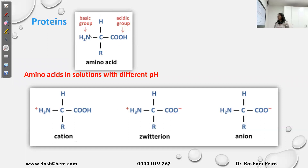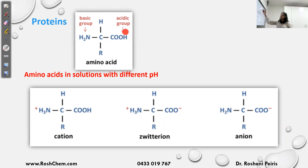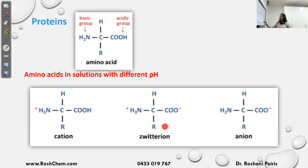Amino acids can exist in different forms depending on the solution. We can have the cation form, the zwitterion form, and the anion form. The zwitterion form is the neutral form which exists at intermediate pH, where you have COO minus and NH3 plus. The COOH group is acidic and can remove H plus to become COO minus, and the NH2 group is basic and can take H plus to become NH3 plus. So in this form — the zwitterion form — you have both plus and minus, making it neutral.